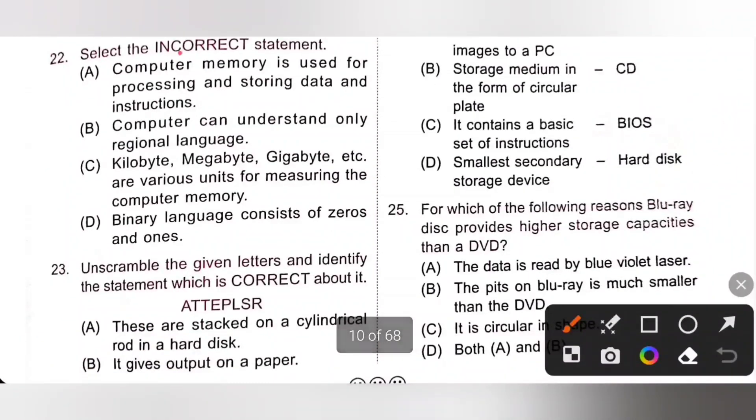Next question. Select the incorrect statement. We need to select the incorrect statement. Option A, computer memory is used for processing and storing data and instruction. It is the correct statement. B, computer can understand only regional language. It is incorrect. Because computer understands only machine language, that is low level language.